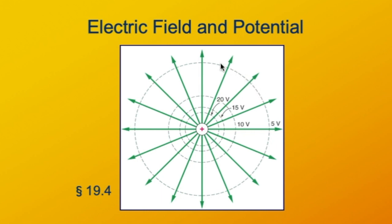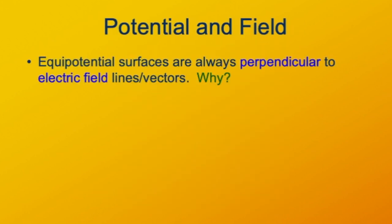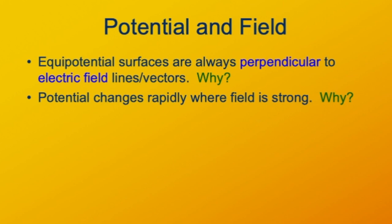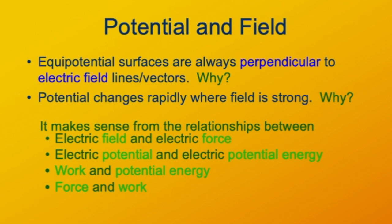The field lines and the lines of equal potential are always perpendicular to each other. This is mathematically necessary because a line of equal potential means every place on this line has the same potential, so the field can't be doing any work on it. If it were doing work, that would change the electric potential, so the force must be perpendicular to the path. To recap: equipotential surfaces are always perpendicular to electric field lines, and the electric potential changes rapidly where the field is strong.